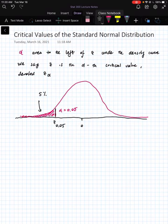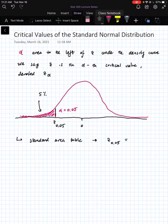So how do we find this? Well, we can use technology or we can use a table. So as we discussed before, if we use a standard area table, then we'll be looking at 0.05 inside the table and working our way out to the margin, so if we use that, we'll find that this critical value is negative 1.645.